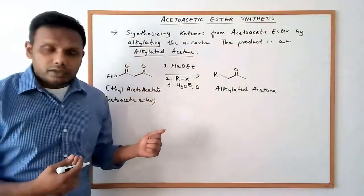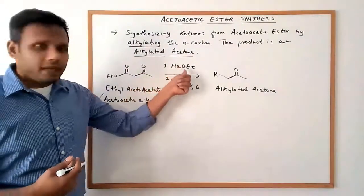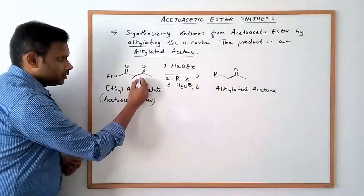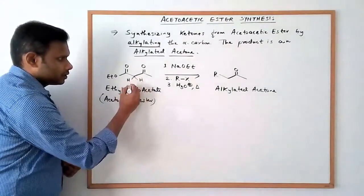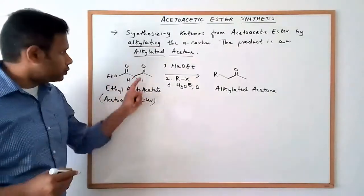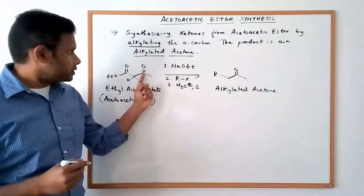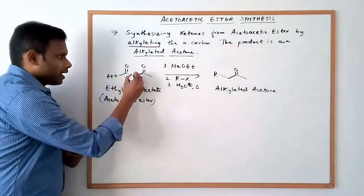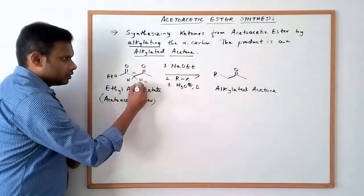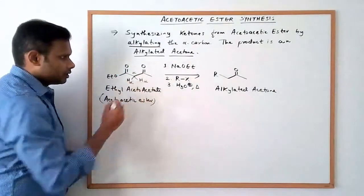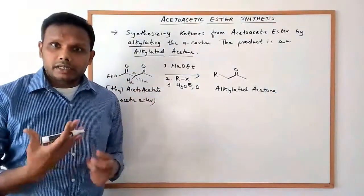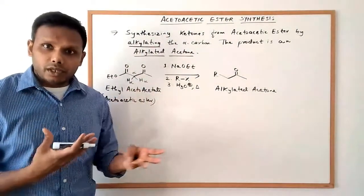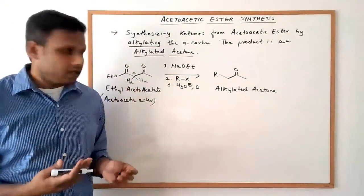What we do in this reaction is we react it with a base. The alpha hydrogens here in between the two keto groups — there's a carbonyl group, a ketone group, and there's an ester group — so the alpha hydrogens in the middle here are particularly acidic.